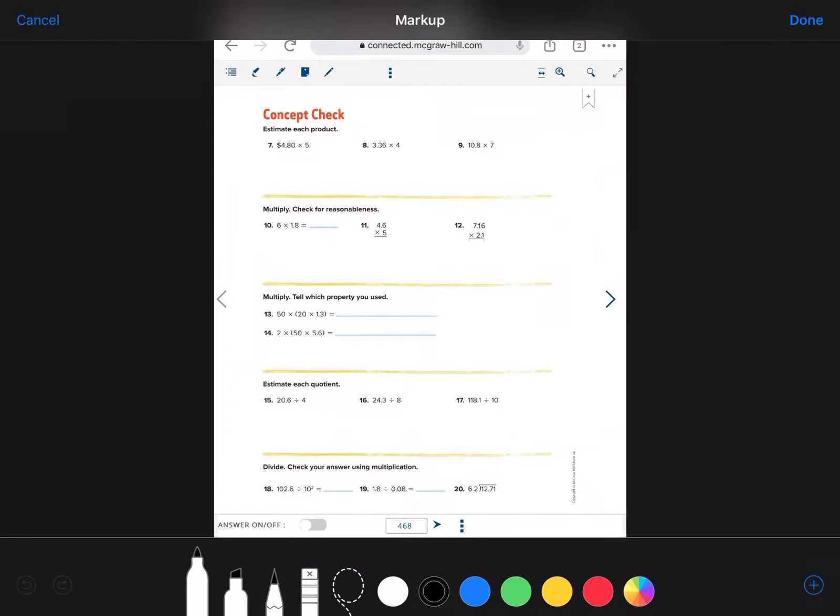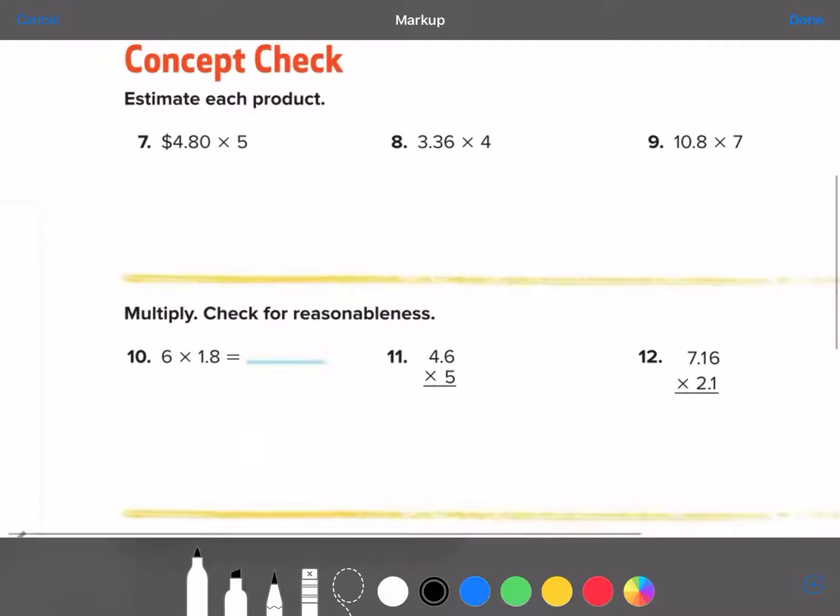Okay, let's begin. Alright, on number seven. Estimate each product. Which they mean they want you to estimate to find the product. So look at $4.80. Is that closer to $4 or is it closer to $5? So they want you to do $5 times 5. Don't forget that dollar sign in there as you finish that problem.